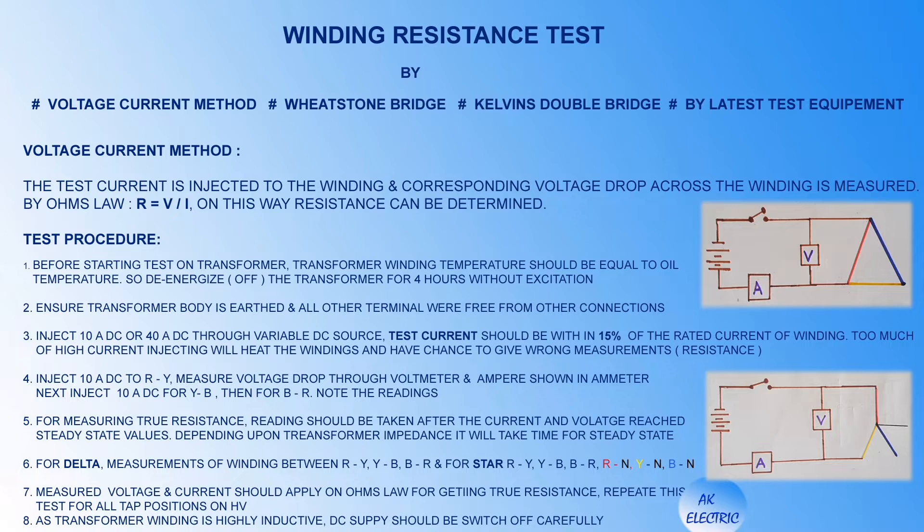Inject 10A DC to R-to-Y. Measure voltage drop through voltmeter and ampere shown in ammeter. Next inject 10A DC for Y-to-B, then for B-to-R. Note down the readings. For measuring the true resistance, readings should be taken after the current and voltage reach steady-state values. Depending upon the transformer impedance, it will take time to reach steady-state.